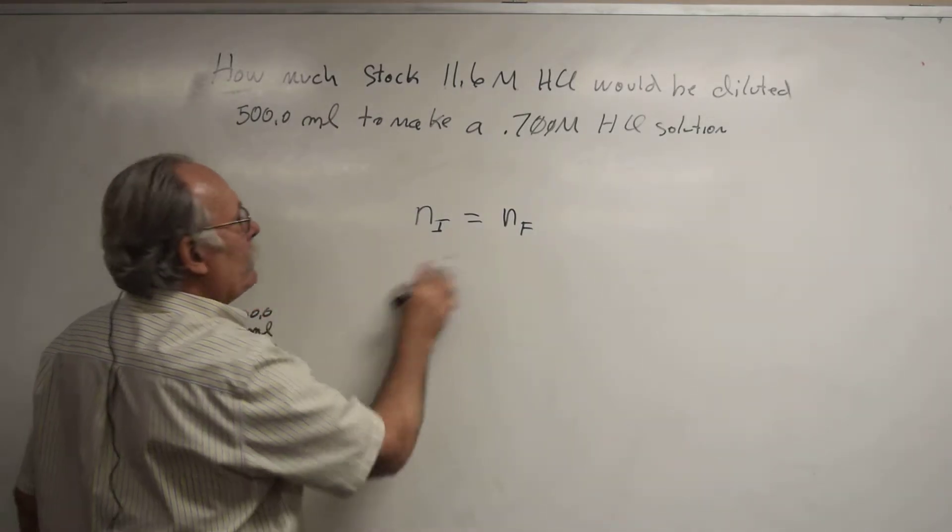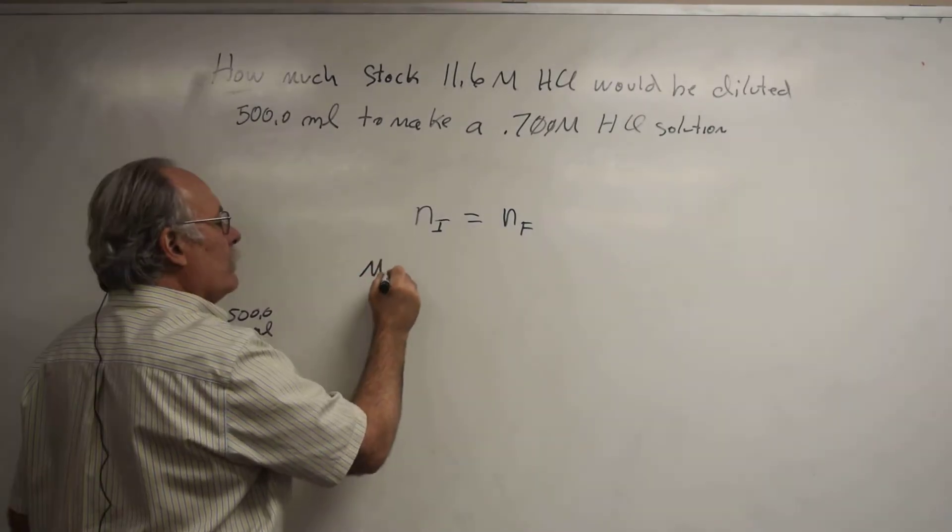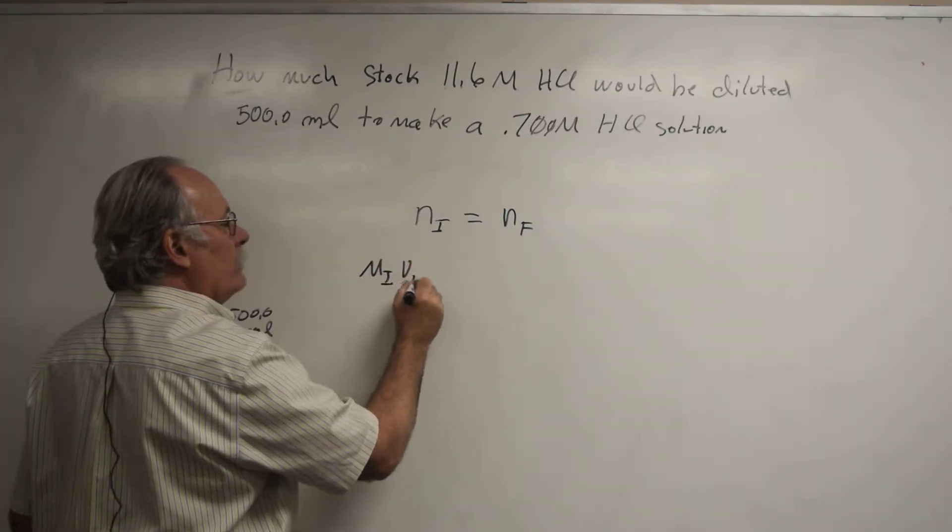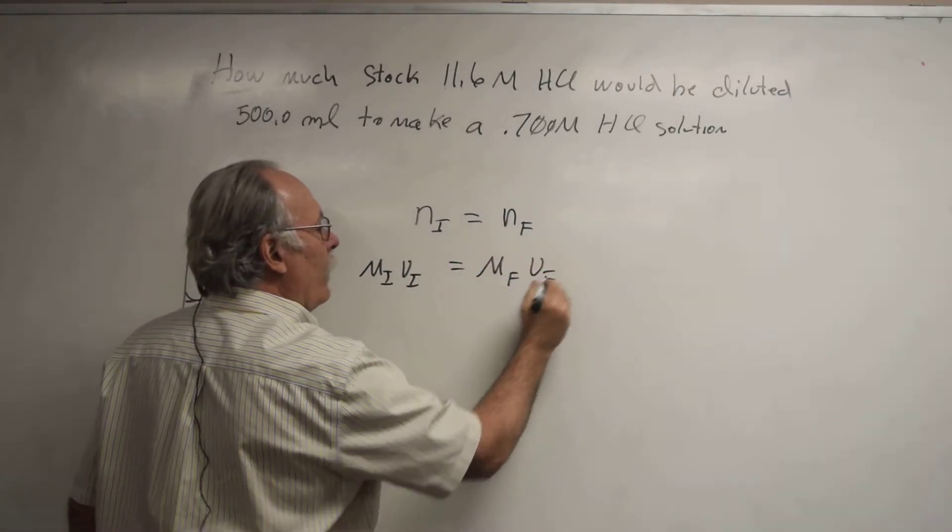And this results in what we call the dilution equation. The initial moles are the molarity initial times the volume initial. The final moles are the molarity final times the volume final.